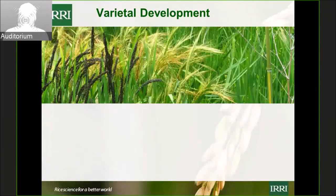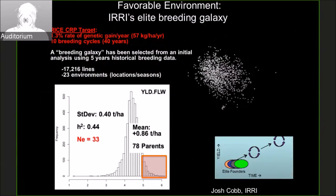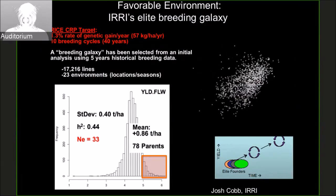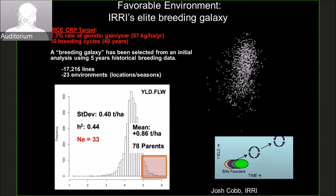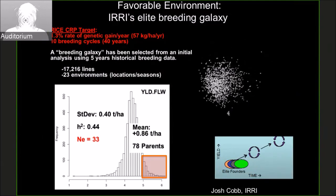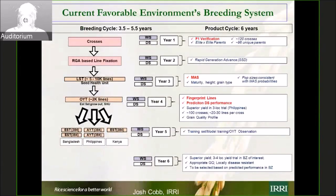This brings us to the varietal development program, specifically the favorable environment breeding program led by Josh Cobb, who joined us from Pioneer. The first thing he did was analyze all the lines available — 17,216 lines — and from those he selected 78 parents with higher mean yield. He had these 78 parents sequenced. This is a comparison of our earlier breeding, which had a product cycle of six years, versus the current system where we are at 3 to 3.5 years, using RGA to advance generations. F1 through F5 are grown by single seed descent in the RGA, followed by large-scale evaluation.